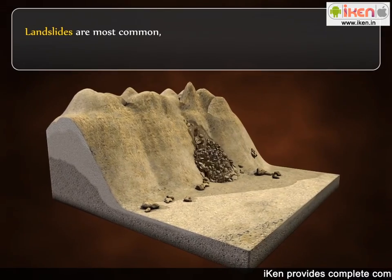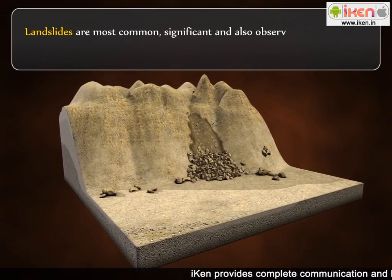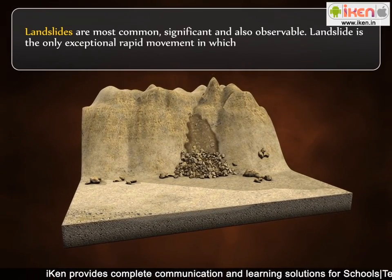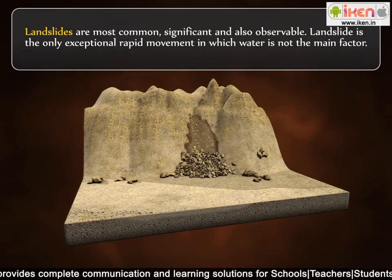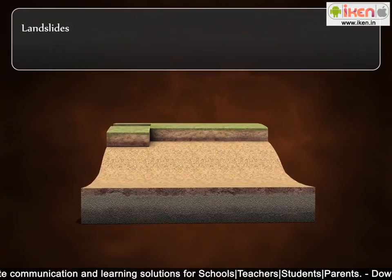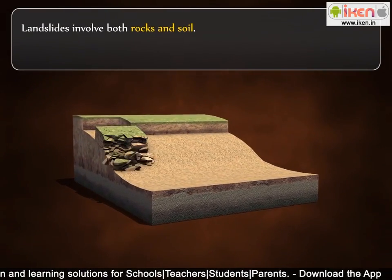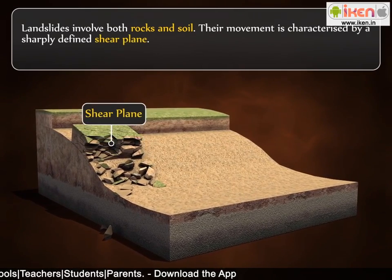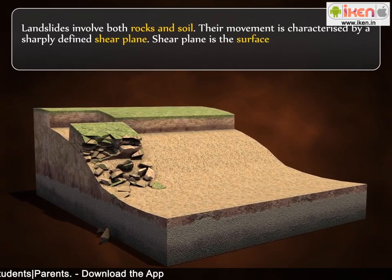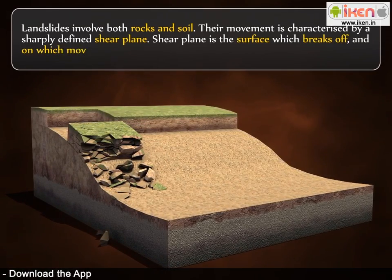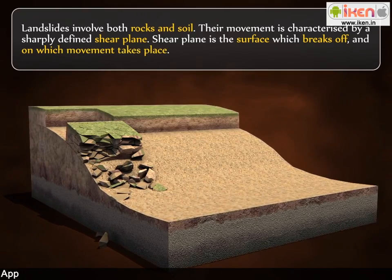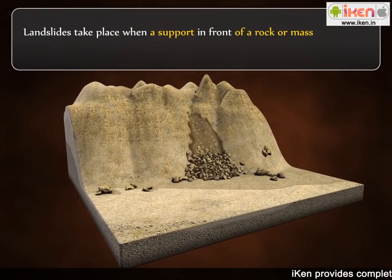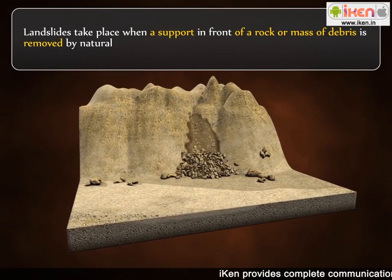Landslides are the most common, significant, and observable. Landslide is the only exceptional rapid movement in which water is not the main factor. Landslides involve both rocks and soil. Their movement is characterized by a sharply defined shear plane — a surface which breaks off and on which movement takes place. Landslides take place when a support in front of a rock or mass of debris is removed by natural or artificial forces.